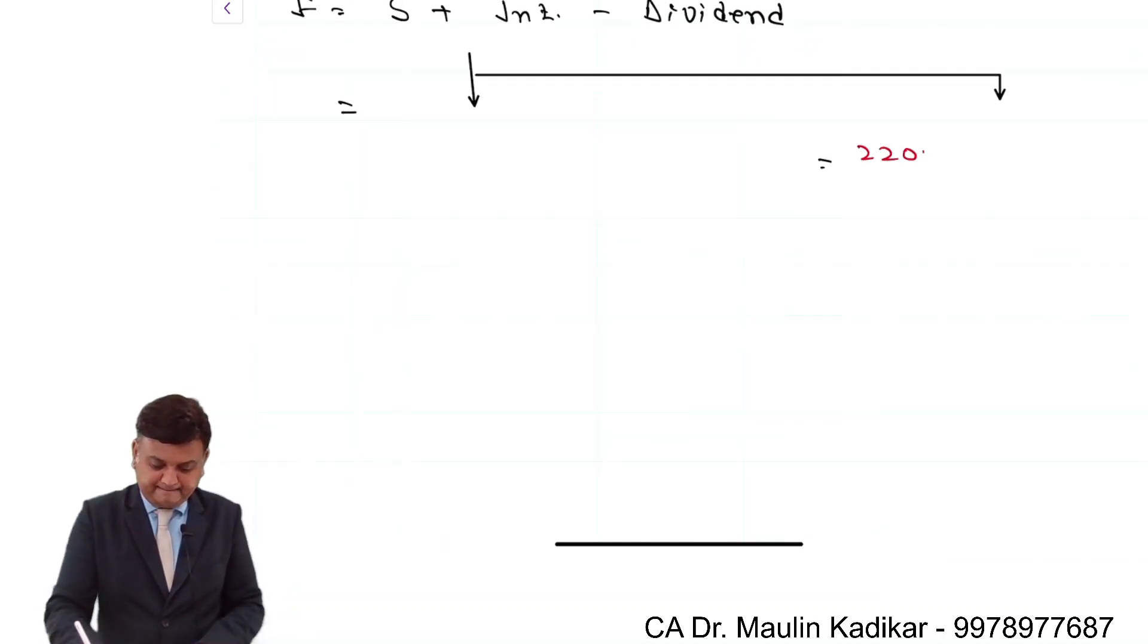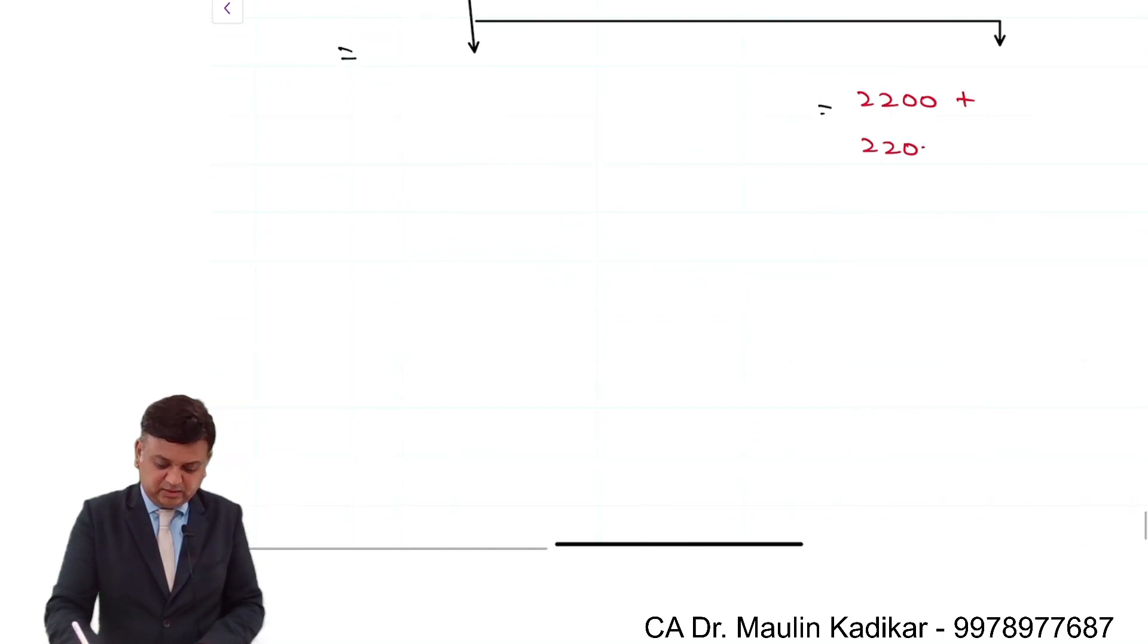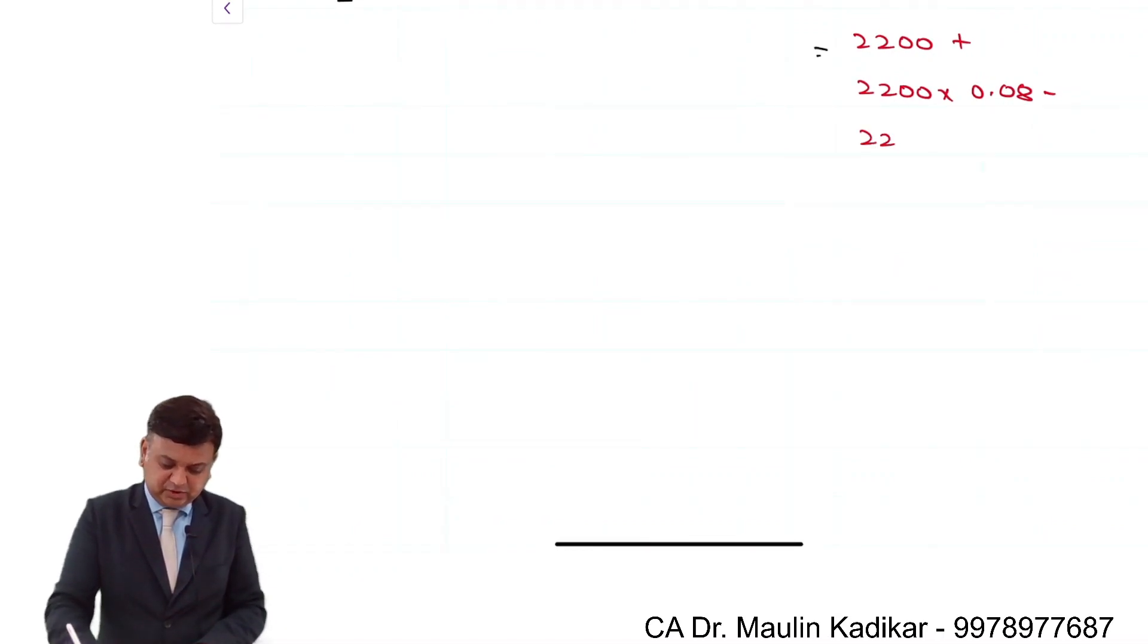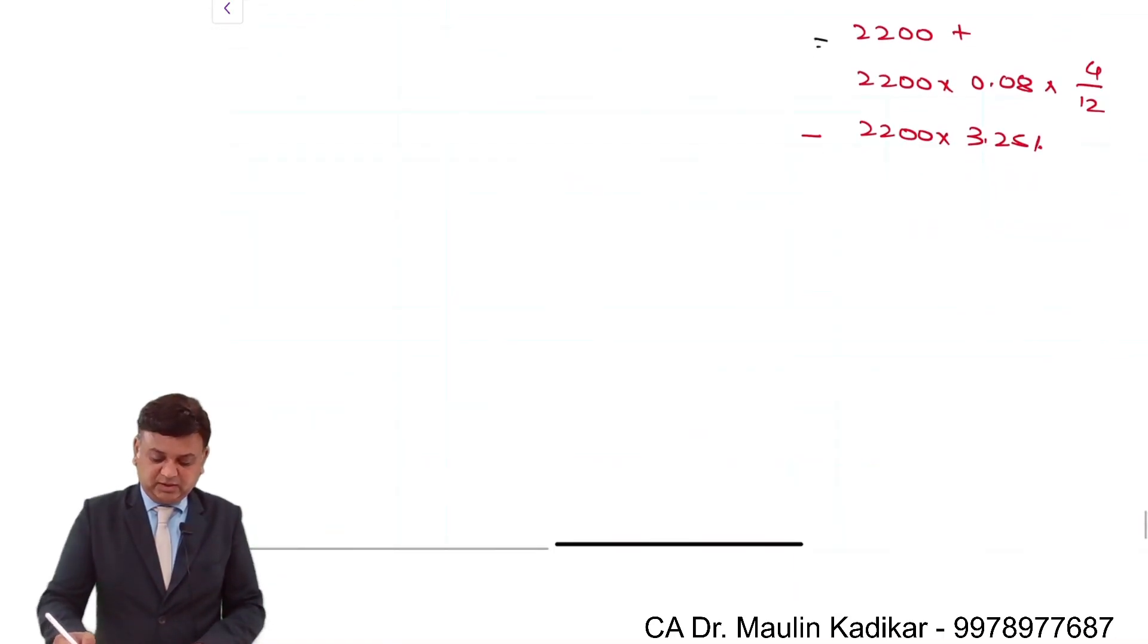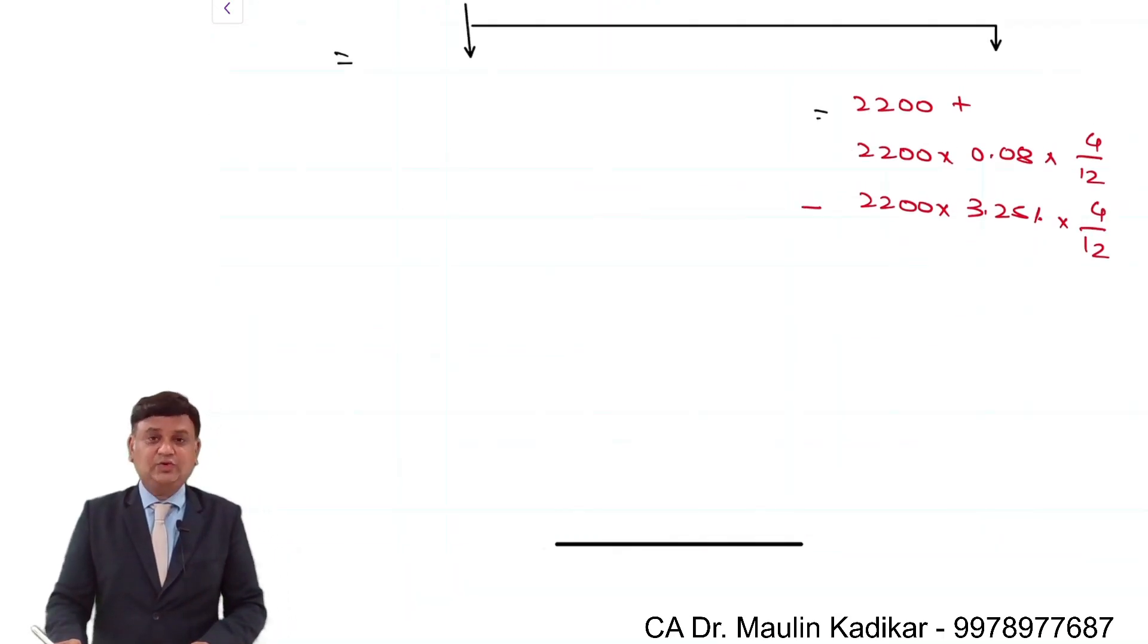2,200 plus 2,200 × 0.08 - I'm sorry, 0.08 × 4/12, because the futures price is to be found for 4 months, minus 2,200 × 3.25% × 4/12. The dividend yield which we calculated times 4 divided by 12. That is the way we were usually calculating the answer.